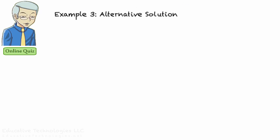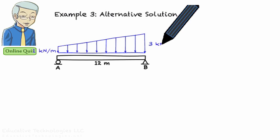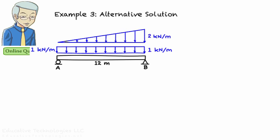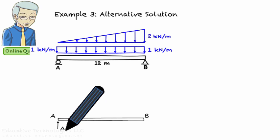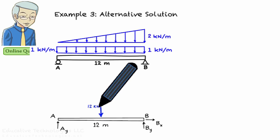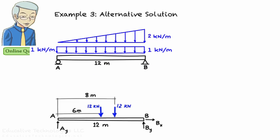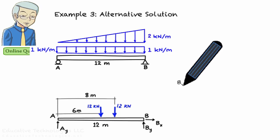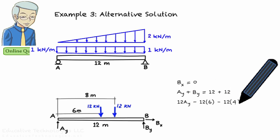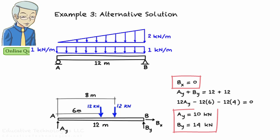An alternative formulation decomposes the trapezoidal load into a rectangular load and a triangular load, such that adding the triangle to the rectangle gives the trapezoid. Each distributed load is then replaced with its equivalent concentrated load: the rectangular load gives 12 kN placed at the center of the beam, and the triangular load gives 12 kN placed at the geometric center of the triangle, 8 meters from the left end. The equilibrium equations based on this alternative formulation produce the same support reactions.